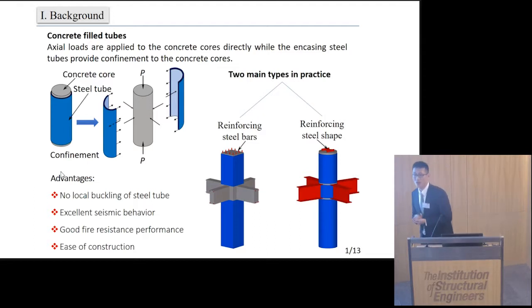In practice, the steel tube is generally disconnected at the beam-to-column joints. Thus, to enhance the stiffness and the bending strength of this kind of column, the concrete core always needs to be reinforced by steel bars or steel shapes, as shown in these two figures. This kind of composite construction possesses many advantages.